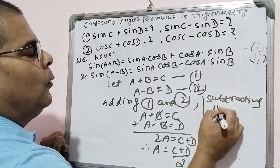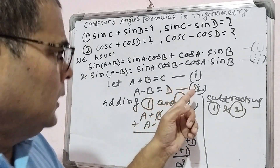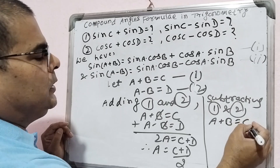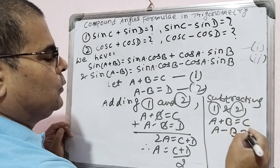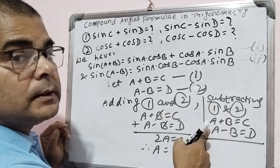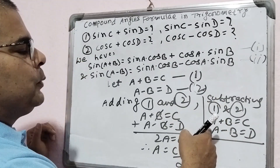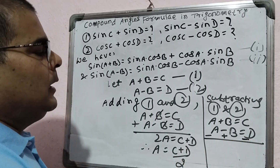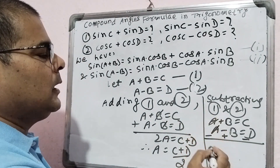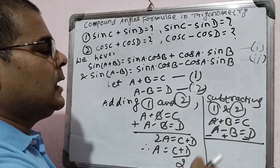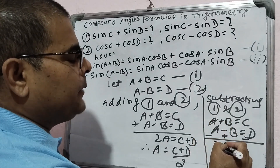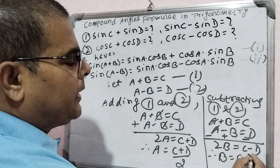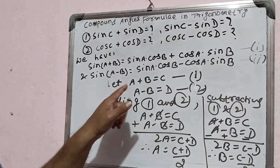Similarly, by subtracting equation 2 from equation 1: we have a plus b equals C and a minus b equals D. When subtracting, the algebraic signs change, so a minus a cancels out, and both b terms become positive, giving 2b equals C minus D. Therefore, b equals (C minus D) by 2.